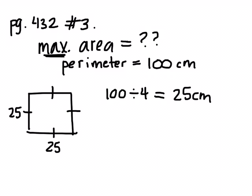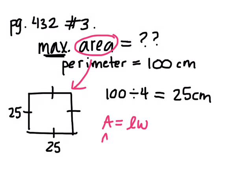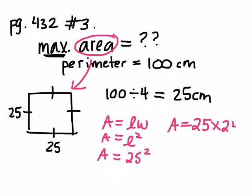We've just discovered that a square is always going to produce the maximum area — that's why I drew a square. Now I know the dimensions. Can you find the area of the shape? How do you find the area of a square or rectangle? Area equals length times width, or in this case, area equals length squared because they're both the same. 25 times 25, or we can write it as 25 squared.